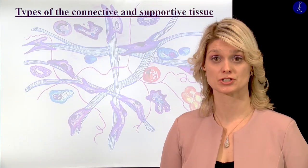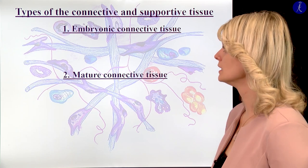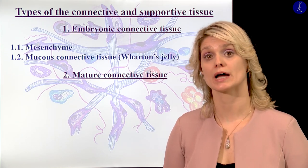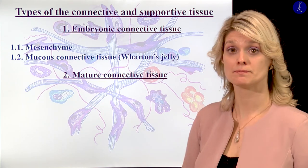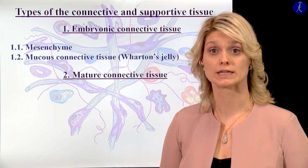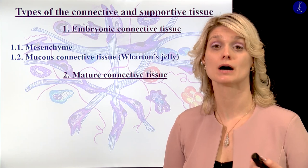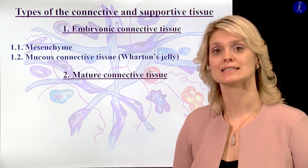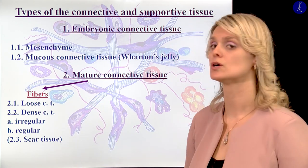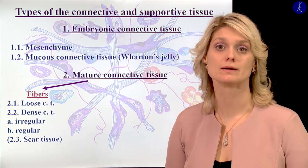Let's see now the classification of the different connective tissue types. First, we can talk about two main groups: the embryonic connective tissue and the mature connective tissue. Within the embryonic connective tissue, I would like to show you two main types — the mesenchyme and the mucus connective tissue, which is a special connective tissue of the umbilical cord. Within the mature connective tissues, we can divide them into three main groups depending on what is the dominant structure. We can talk about fibers-dominant connective tissue, for example loose connective tissue, dense connective tissue, and scar tissue.